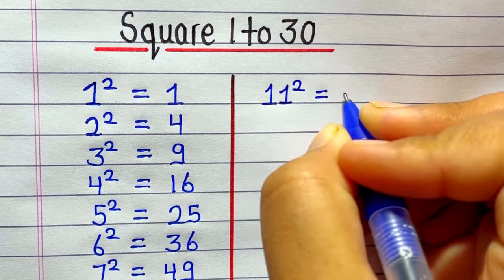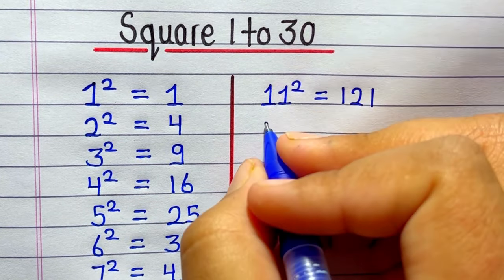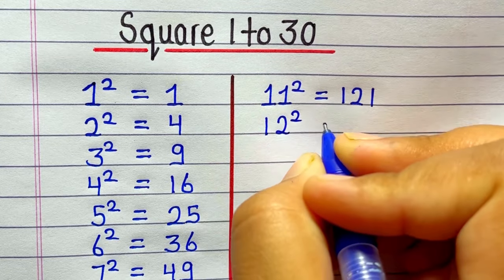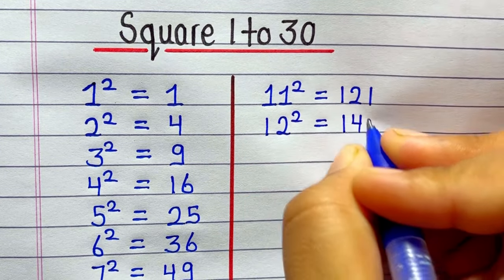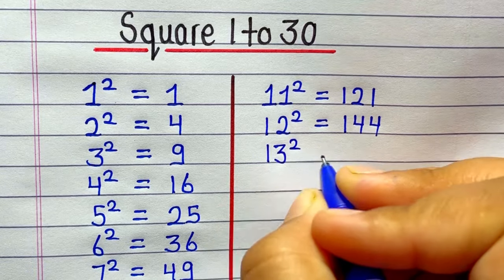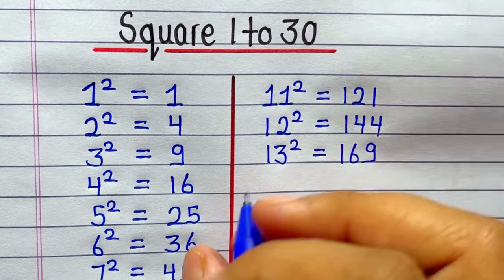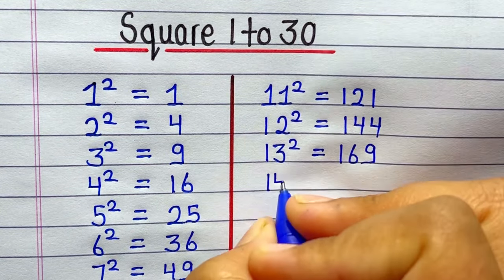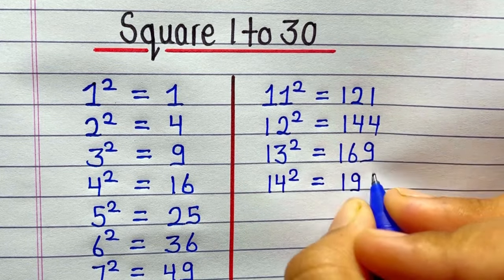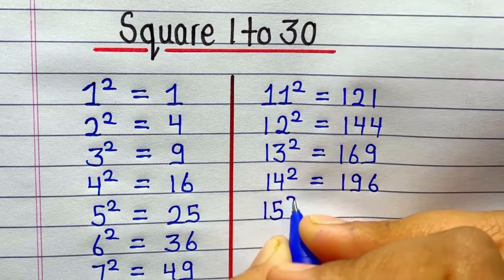11 ka square hai 121. 12 ka square hoga 144. 13 ka square hai 169. 14 ka square hoga 196.